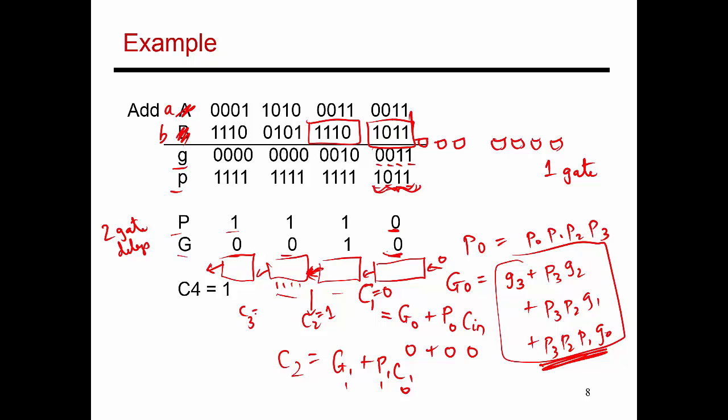Then C3 is similarly, it's going to be G2 plus P2 times C2, and so this is a 1. P2 is a 1, and G2 is a 0, so this is going to produce a carry. So C3 is 1 as well, and then C4 is G3 plus P3 times C3. C3 is a 1. P is also a 1, and this is a 0, so this also produces a carry, and that's how I get the result that a carry is being generated out of the most significant bit.